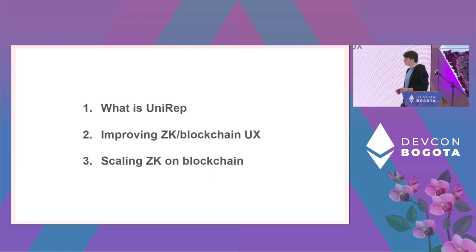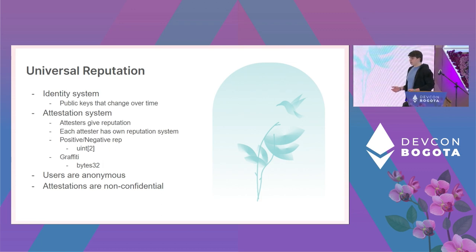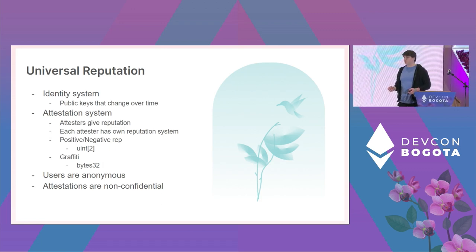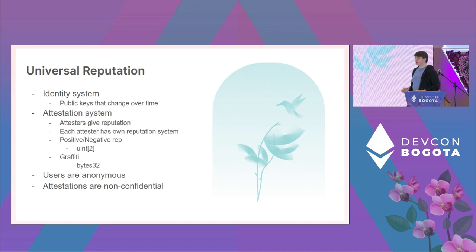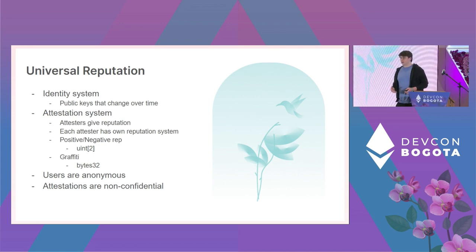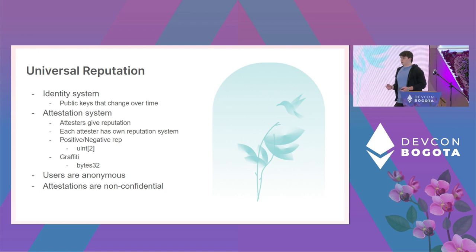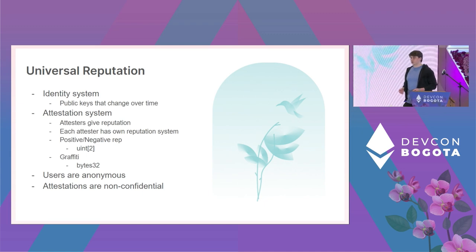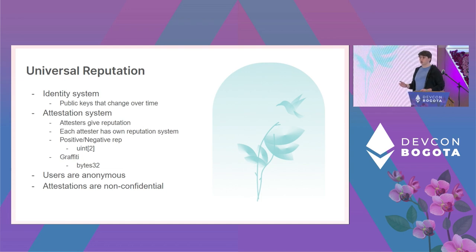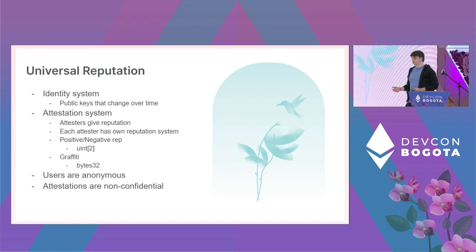UniRep is short for Universal Reputation. You can think of it as two things: first, it's an identity system that gives you anonymity by creating public keys that change over time. The second component is an attestation system — attesters, which you can also think of as applications or smart contracts, give reputation to users. Think of attesters to reputation like ERC20 contracts to tokens; they define how reputation is distributed, spent, and destroyed.